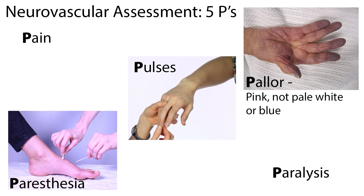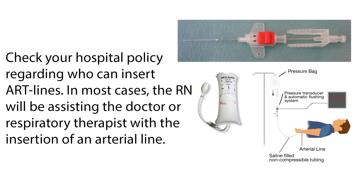Another portion of caring for an arterial line is the neurovascular assessment, which includes the five P's. Pain: check for pain in the extremity of the arterial line. Pulses: check for collateral pulses and capillary refill. Pallor: check the hand for a nice pink color — we don't want to see paleness or cyanosis. Paresthesia or sensation: there should be no numbness or tingling. Paralysis: there should be movement of the extremity.